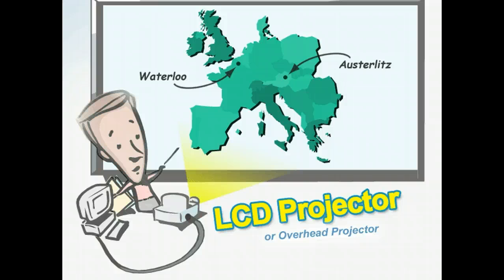If you're looking for additional hardware to use with your computer, you can use an LCD projector. You can project a map of Europe on a whiteboard and have students use dry erase markers to trace Napoleon's military campaigns on the board. Similarly, you can project a map using an overhead projector and have students identify cities using wet erase markers on the transparency.